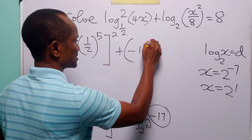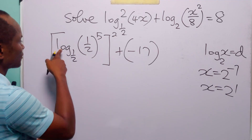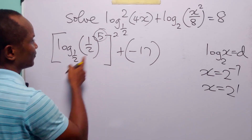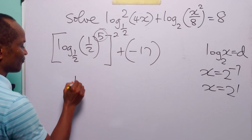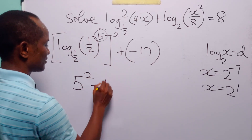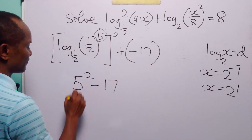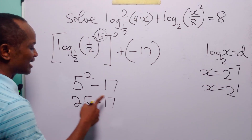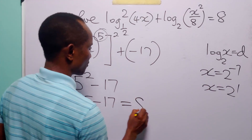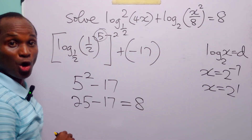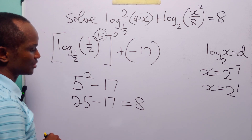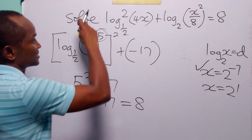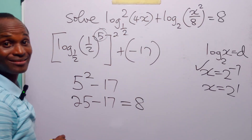So here we have minus 17. Log to base one-half of one-half to the power 5 is equal to 5. So here we have 5 squared minus 17. 5 squared is 25, and 25 minus 17 equals 8. This is exactly what we have on the right-hand side of the original equation, so this value of x satisfies the original equation.